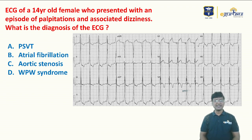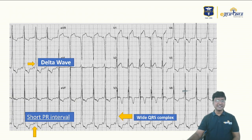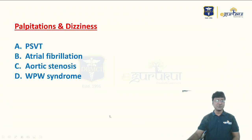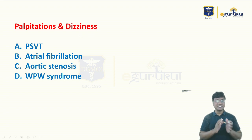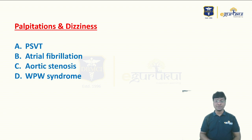The options are: paroxysmal supraventricular tachycardia, atrial fibrillation, aortic stenosis, and WPW syndrome. The clinical presentation is palpitations and dizziness, and these symptoms can be seen in all of these clinical scenarios.